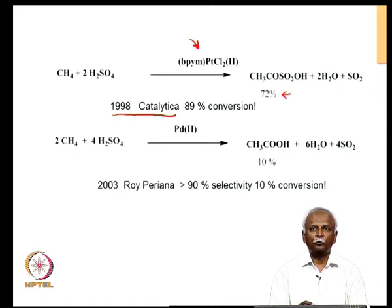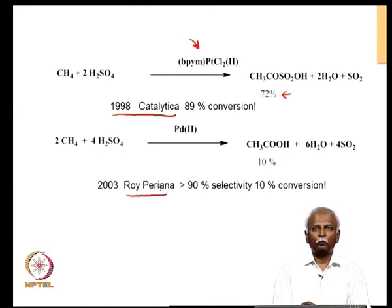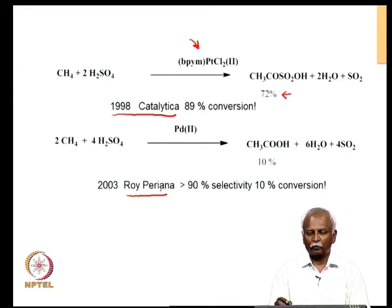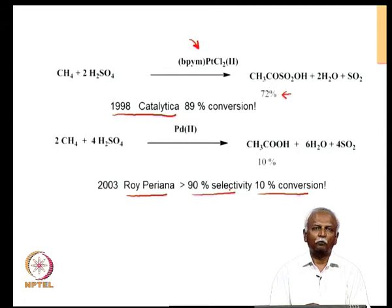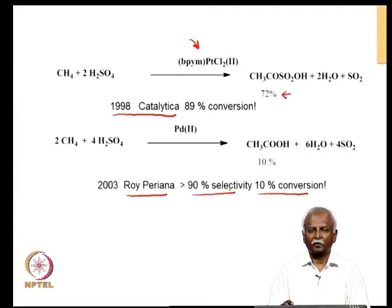Methane is in fact one of the most inert compounds, and if you can activate it and convert it to methanesulfonic acid with such high conversion efficiencies, it is a valuable contribution indeed. You could do this reaction with palladium 2, and that was shown by Ron Periana in 2003. Unfortunately, palladium is not as efficient as platinum and the reaction only proceeds with 10 percent conversion, but 90 percent of this 10 percent — a total of 9 percent — turns out to be only acetic acid with no other side products. The remaining 90 percent of the methane is recovered unreacted but can be recycled in an industrial setup.